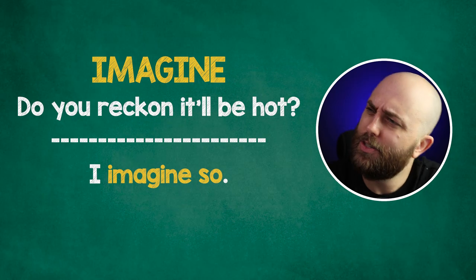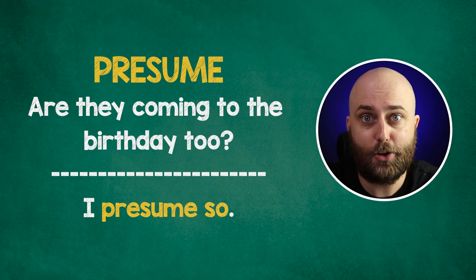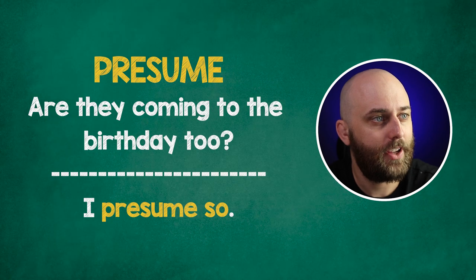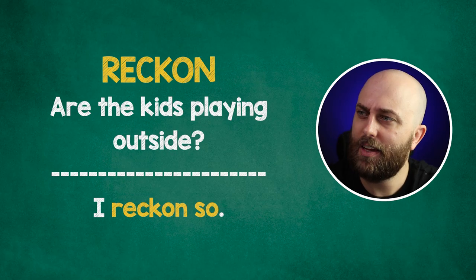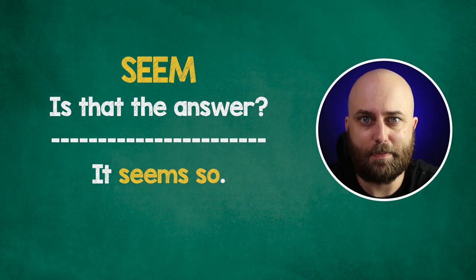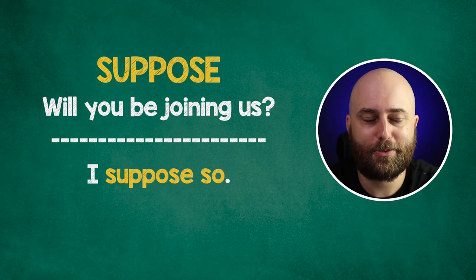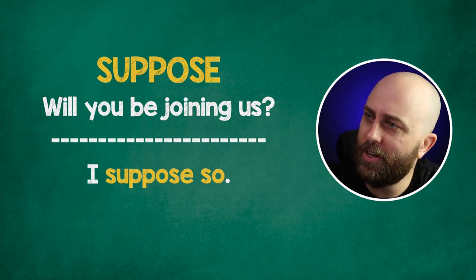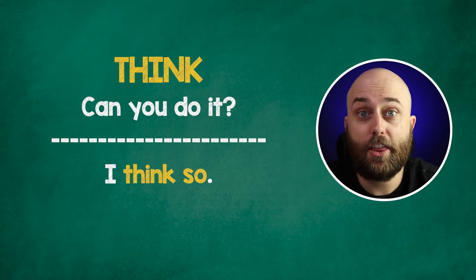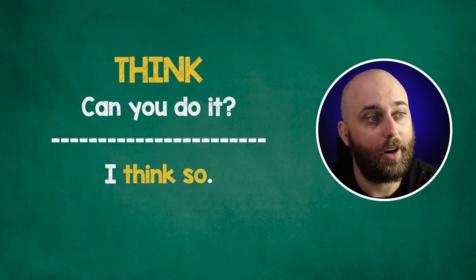'Imagine' — Do you reckon it'll be hot tomorrow? I imagine so. 'Presume' — Are they coming to the birthday party too? I presume so. 'Reckon' — Are the kids playing outside? I reckon so. 'Seem' — Is that the answer? Seem so. 'Suppose' — Will you be joining us? I suppose so. 'Think' — Can you do it? I think so.